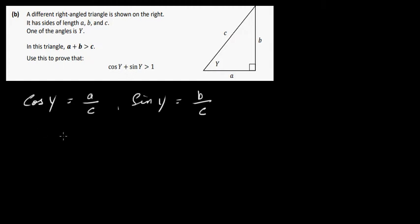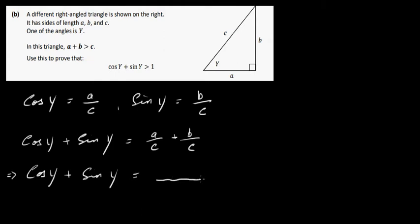So we want to add these two. So cos Y plus sine Y is equal to A over C plus B over C. Now, that just means then that cos Y plus sine Y is equal to... We're just going to add these two fractions here. If you add them, C is our common denominator.